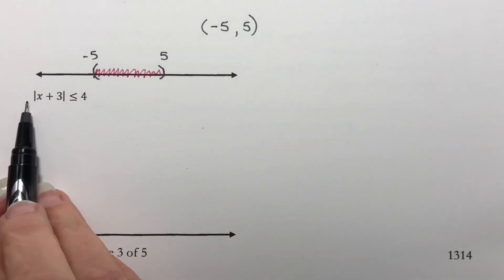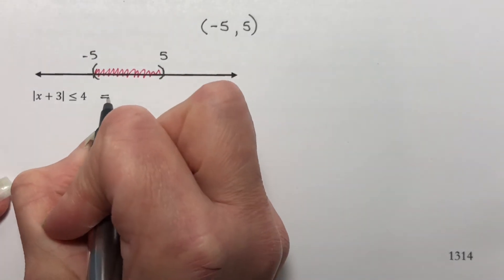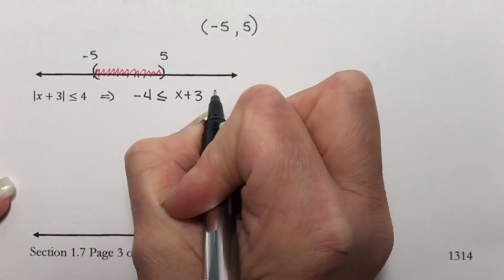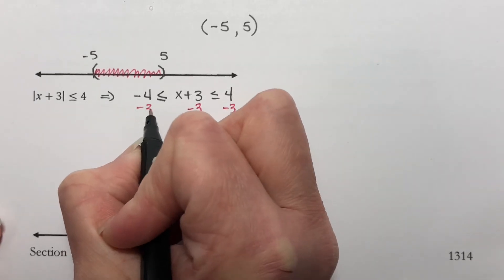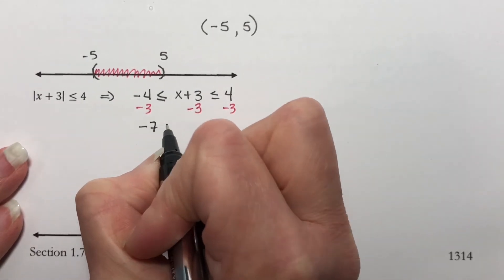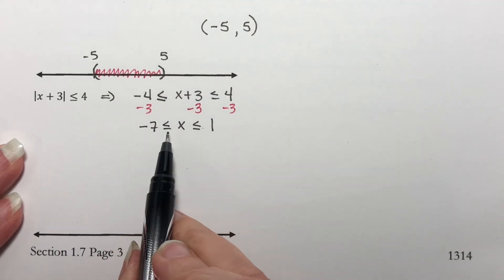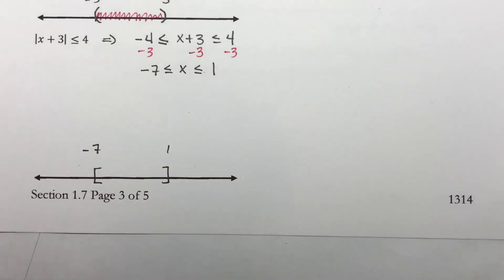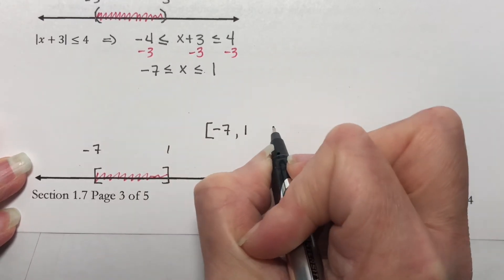Now let's do the absolute value of x plus 3 is less than 4. Wait — I'll treat it as less than or equal to. The absolute value is by itself, so I rewrite this as negative 4 is less than or equal to x plus 3 is less than or equal to 4. Now I want to get the x alone in the middle, so I need to subtract 3 from everything — all three sides. That gives me negative 7 is less than or equal to x is less than or equal to 1. I put these on my graph with brackets: negative 7 and 1, shading between them. In interval notation: [−7, 1].